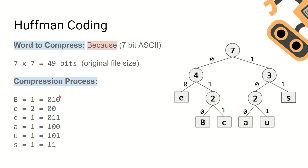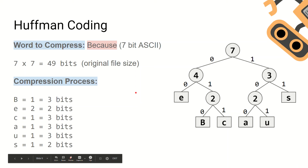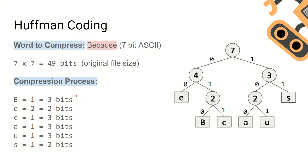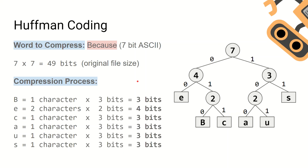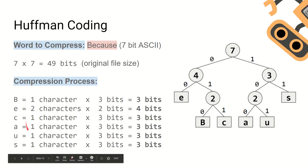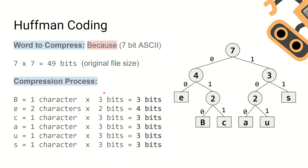This now means that instead of using seven bits to represent each character, we are now using three bits to represent all of the B's, two bits to represent all of the E's, three bits to represent all of the C's, three bits to represent all of the A's, three bits to represent U's, and two bits to represent all the S's. To work out the compressed file size we multiply the number of bits by the number of times each character appears. In 'because' there is one B, each represented with three bits, giving us three bits total for B.